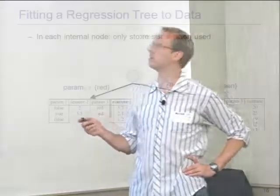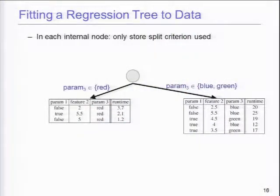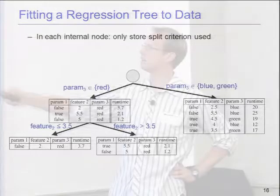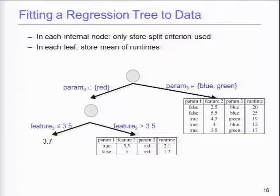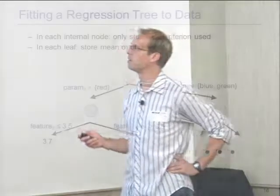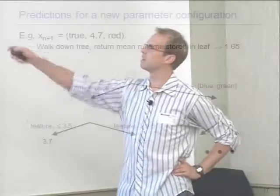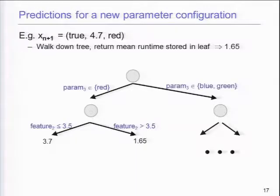In the regression tree, you do a greedy split — parameter 3 carries the most information so you split on that. Then split further, say on a feature. In each leaf, you only store the mean of the runtimes. To predict a new data point, you pump it down the tree: check parameter 3, check feature 2 against a threshold, and predict the mean at that leaf. Very simple but very quick.